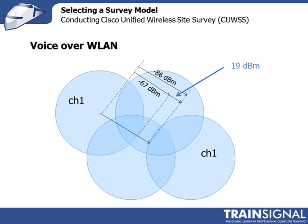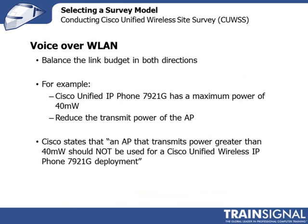Sometimes you'll hear the term isolation between two access points on the same channel being 19 dBm. You can see that the 19 dBm is a measure of the power level between the edges of two access points that are operating on the same channel. This is another thing you have to worry about when you're doing voice over wireless LANs.